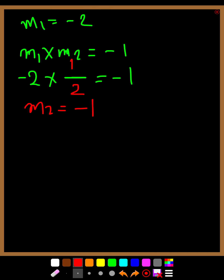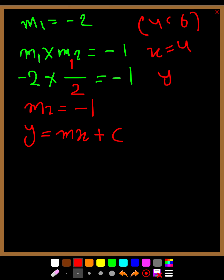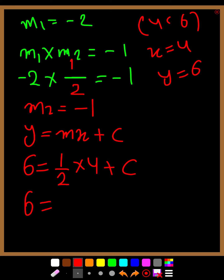Now we can write the equation: y equals mx plus c. The line passes through the point (4, 6), so x equals 4 and y equals 6. Substituting: 6 equals one-half times 4 plus c. One-half times 4 equals 2, so 6 equals 2 plus c. Shifting: c equals 4.